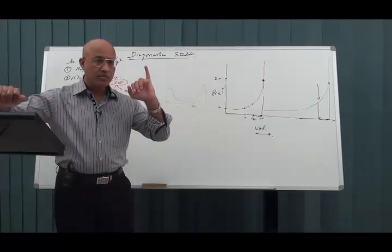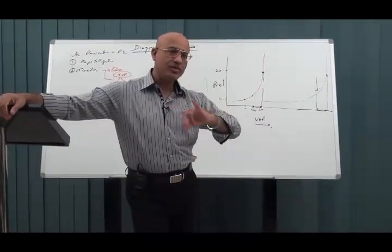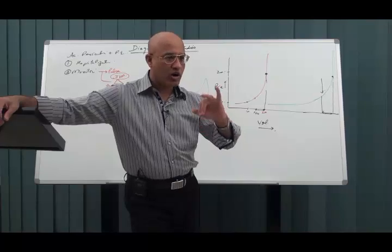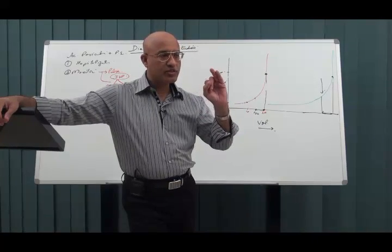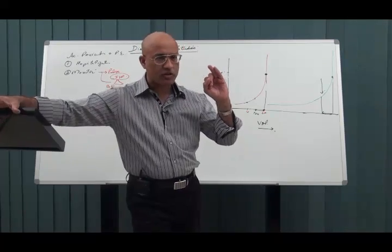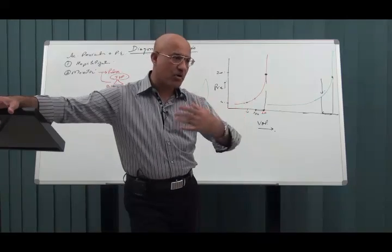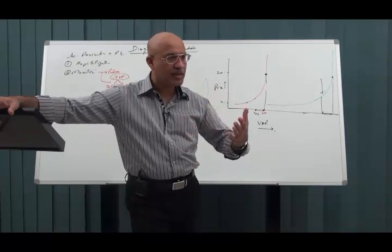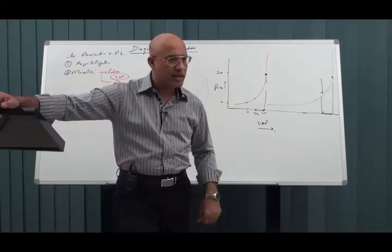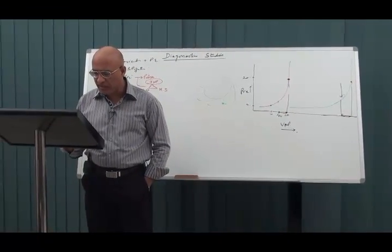So what was the first thing? Pericardiocentesis. That is needle aspiration with leaving a catheter for drainage. Or if there is going to be recurrent and you have to take a tissue sample or it's loculated, you go for surgical drainage. And if there is very recurrent and long-term effusion coming, then you go for pericardiopleural fistula, that is pericardial window.